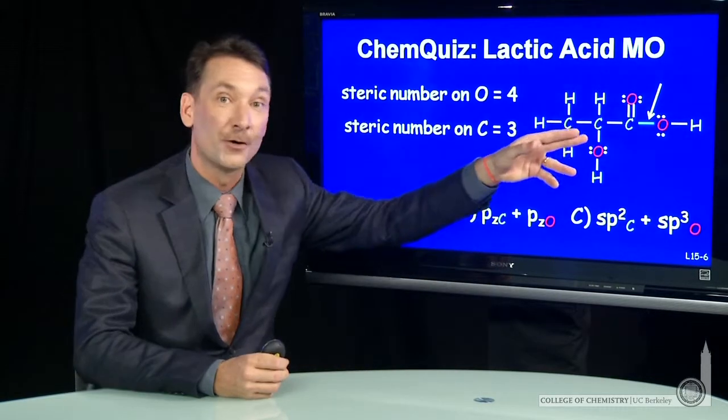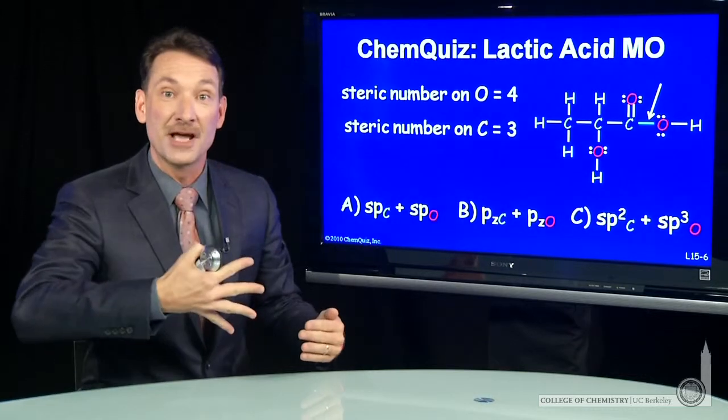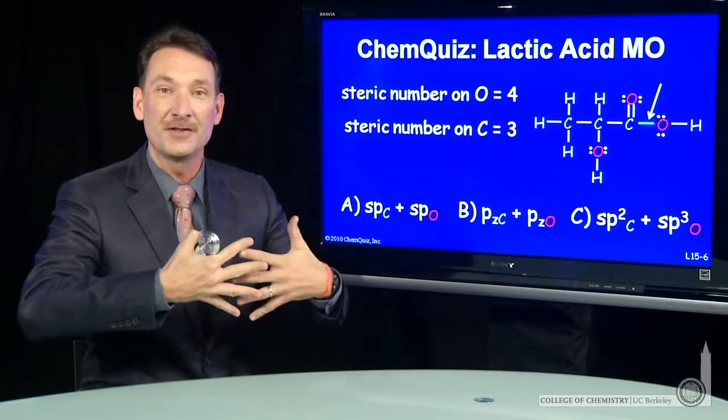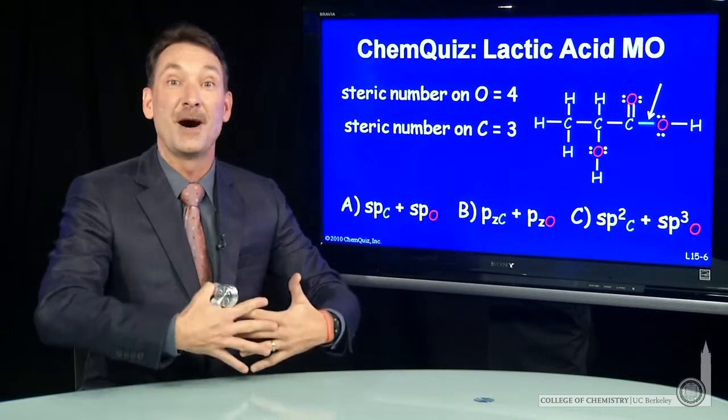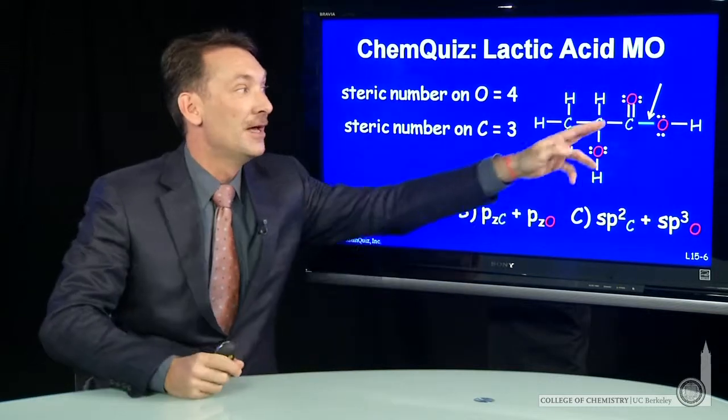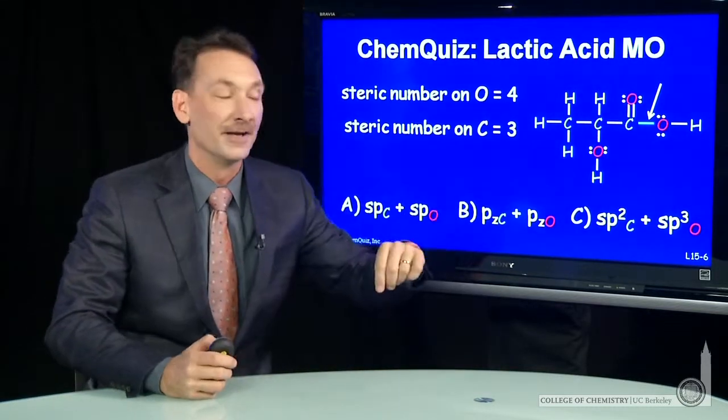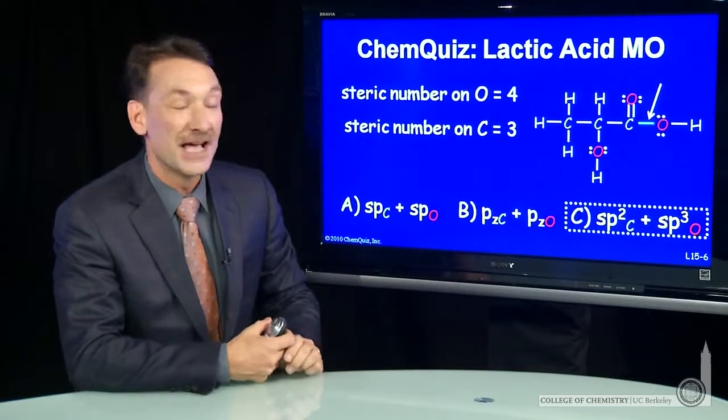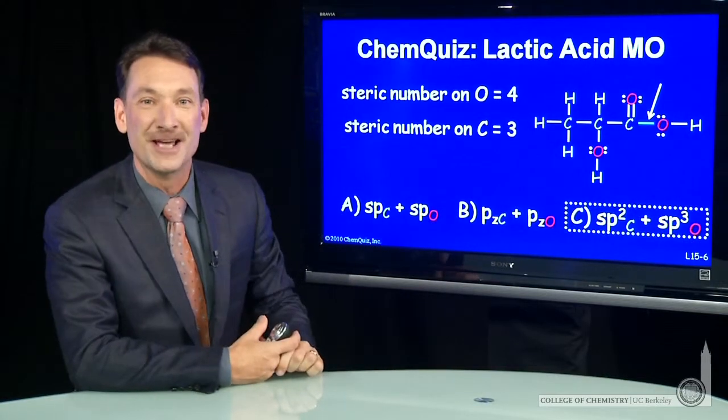So the molecular orbital is going to be an overlap of the SP3 on the oxygen with the SP2 on the carbon. Those will form a sigma bonding and anti-bonding orbital to make up this sigma bond. So the correct answer here, SP2 on carbon to SP3 on oxygen.